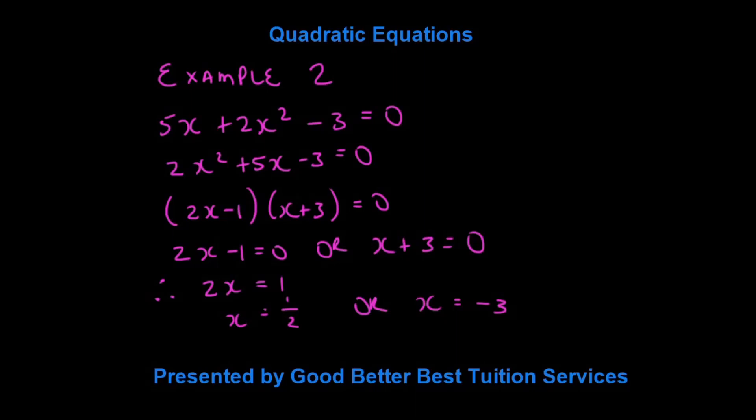We then factorize this, and we say that the factorized expression is 2x minus 1, x plus 3 is equal to 0. And again, we can split the brackets, and we say 2x minus 1 is equal to 0, or x plus 3 is equal to 0, giving us 2x is equal to 1, and therefore x is equal to a half, or x is equal to minus 3.